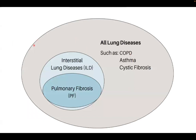Among all lung diseases, we have an entity called interstitial lung disease, encompassing more than 200 diseases. Part of interstitial lung disease is pulmonary fibrosis — not all interstitial lung disease has fibrosis; there is a subgroup called pulmonary fibrosis-initiating diseases. Idiopathic pulmonary fibrosis sits at the center of this group, which is the topic today.